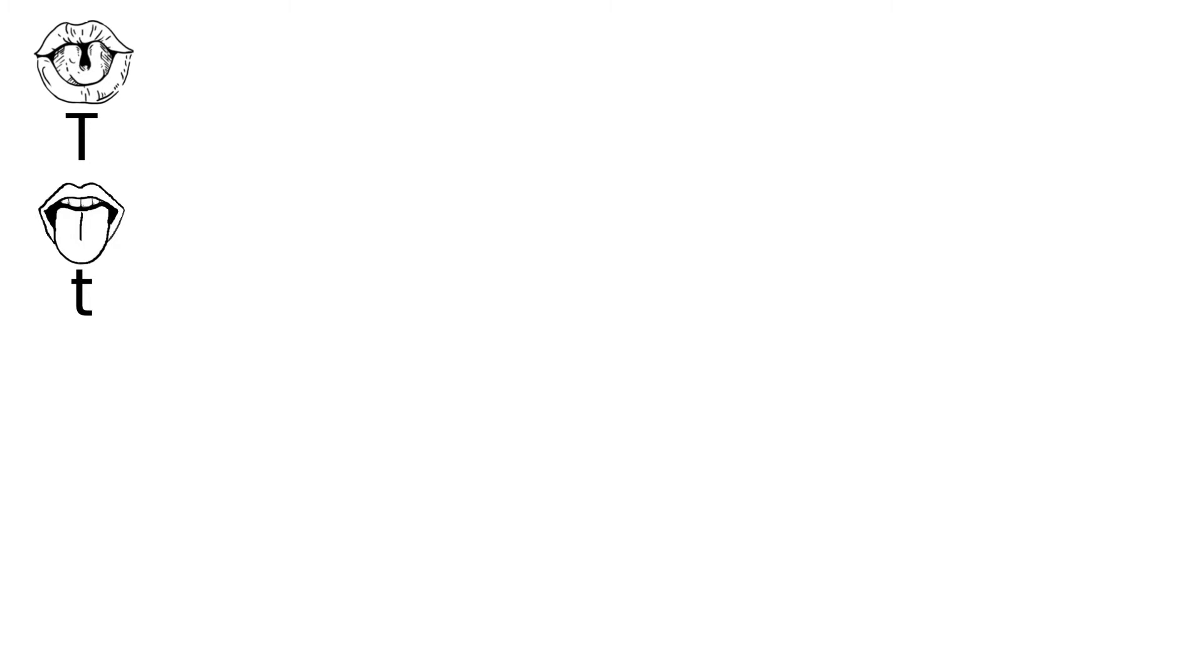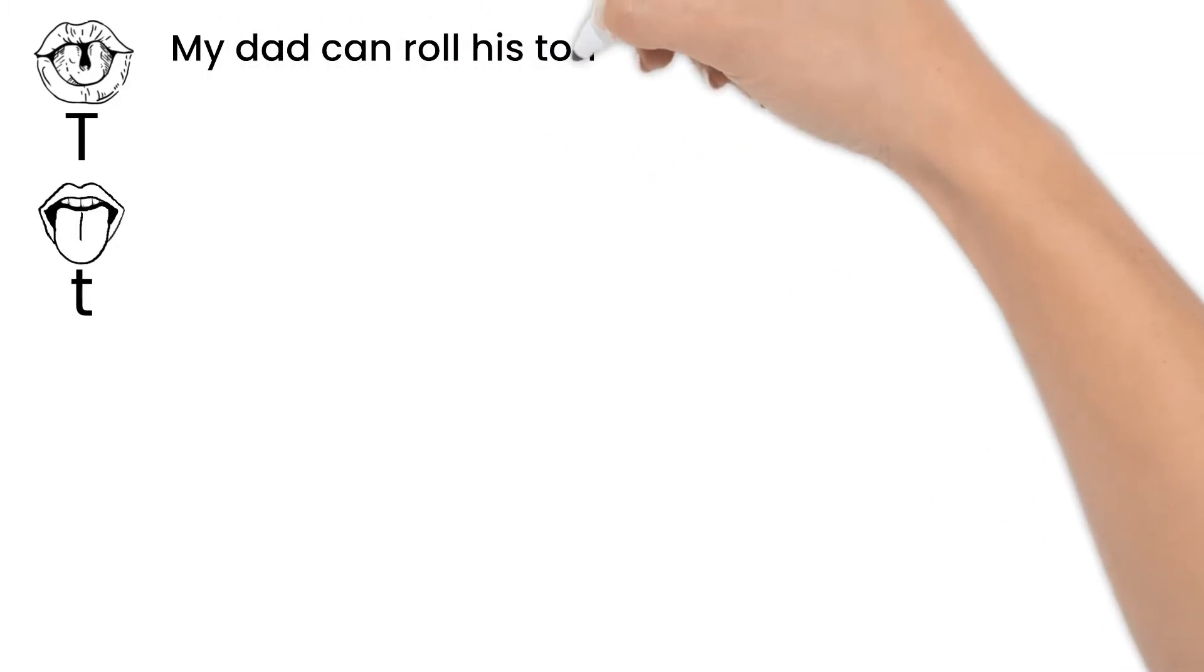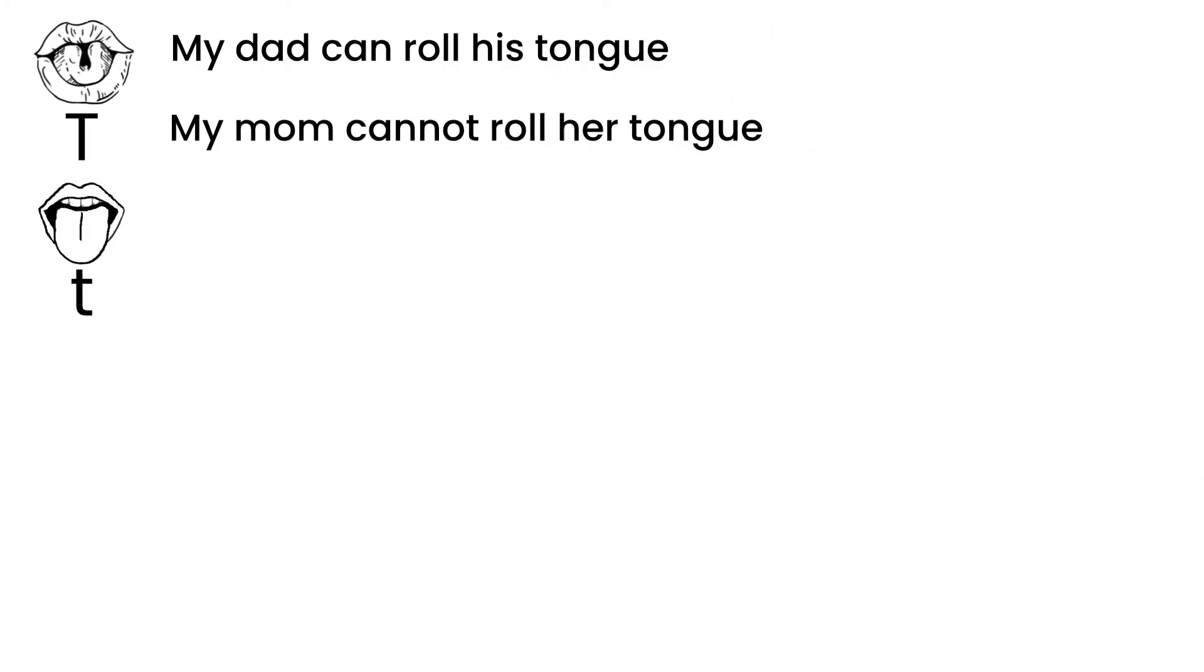Let's discuss a genetic example of this. Going back to the tongue rolling gene, my dad can roll his tongue, which is a dominant trait. I don't know if his parents could. My mom, however, cannot roll her tongue. My dad could be homozygous dominant or heterozygous for tongue rolling. We don't know.